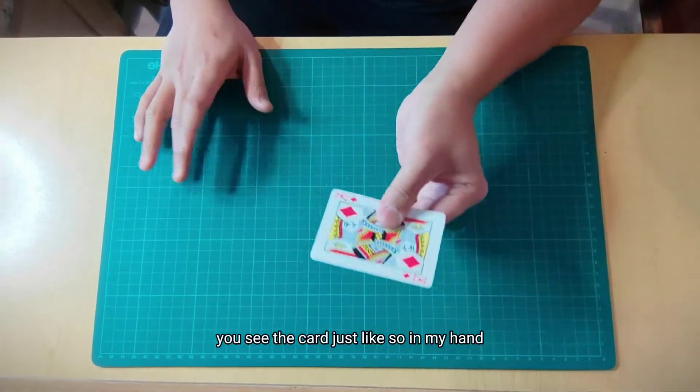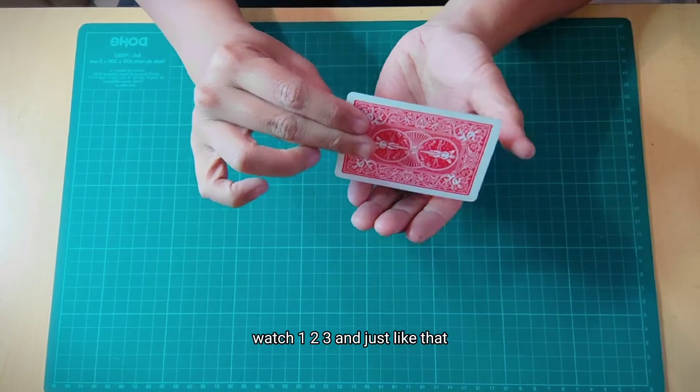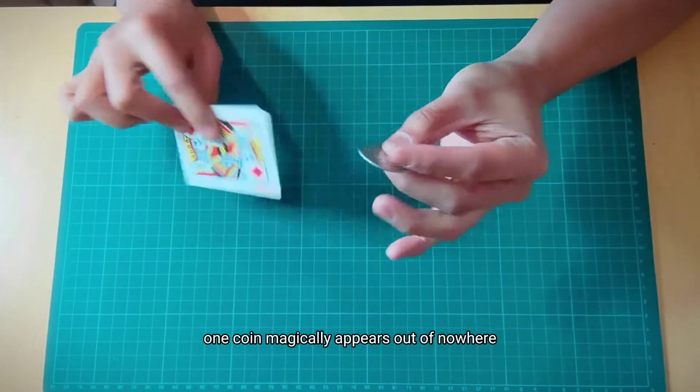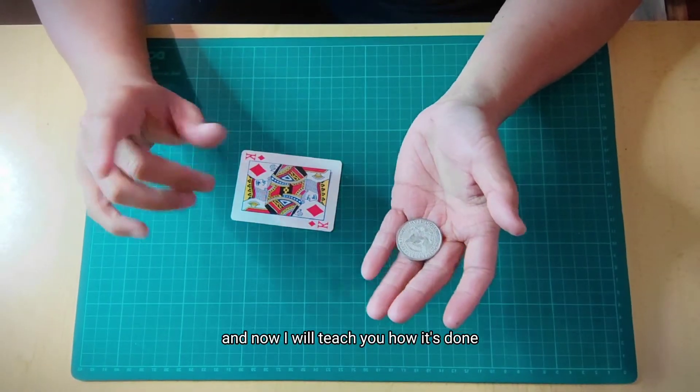Watch closely what I can do. You see the card, just like so, in my hand. Watch, one, two, three. And just like that, one coin magically appears out of nowhere. And now, I will teach you how it's done.